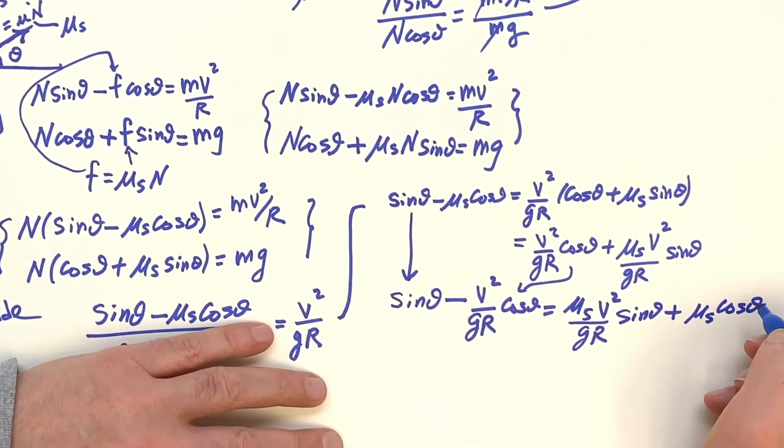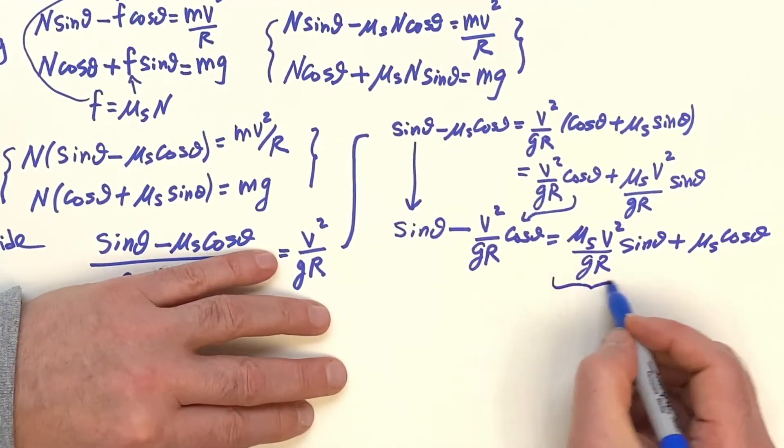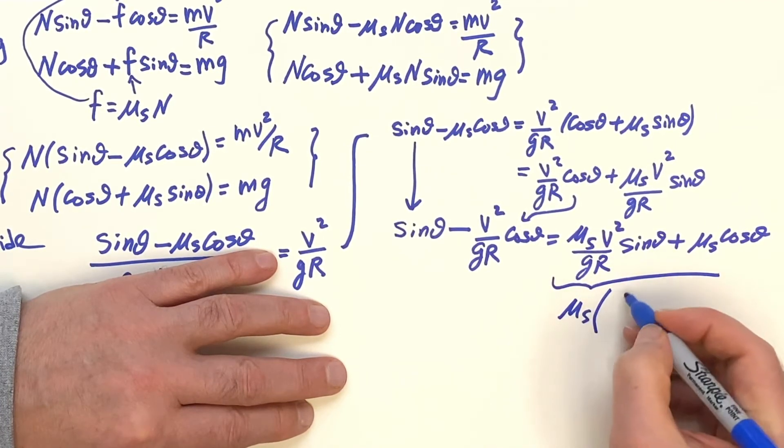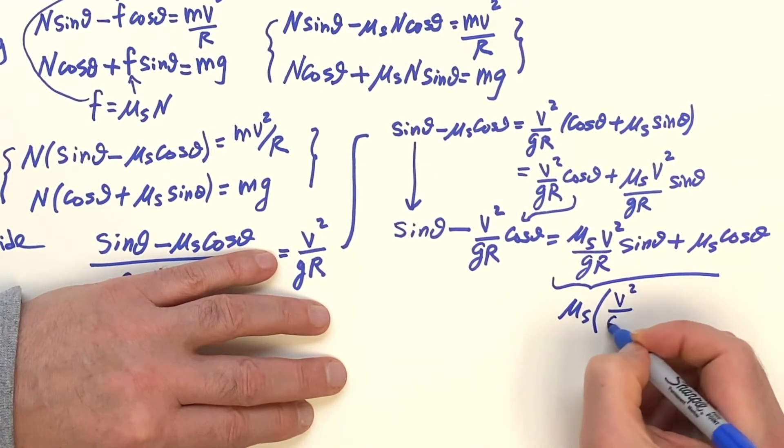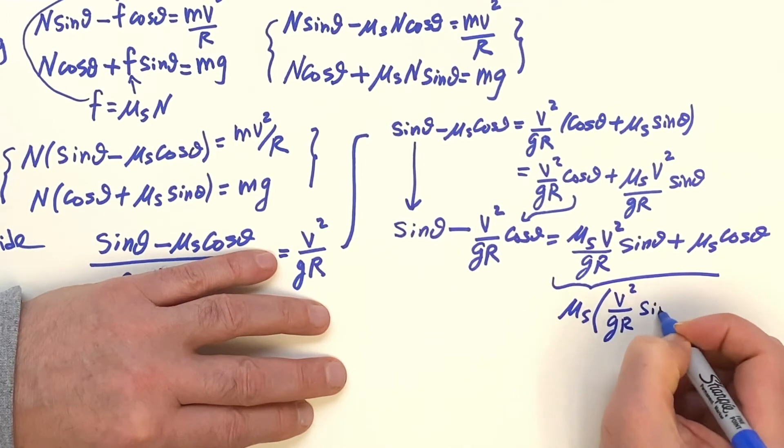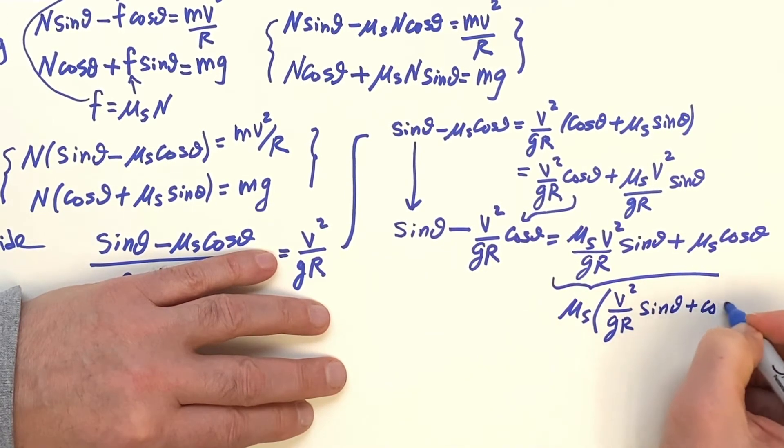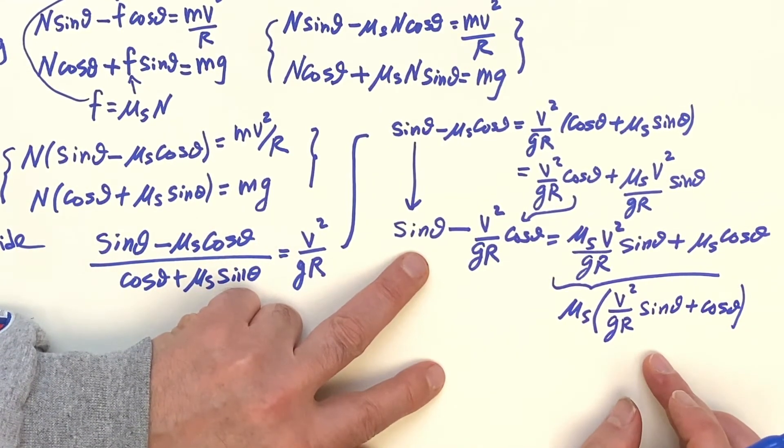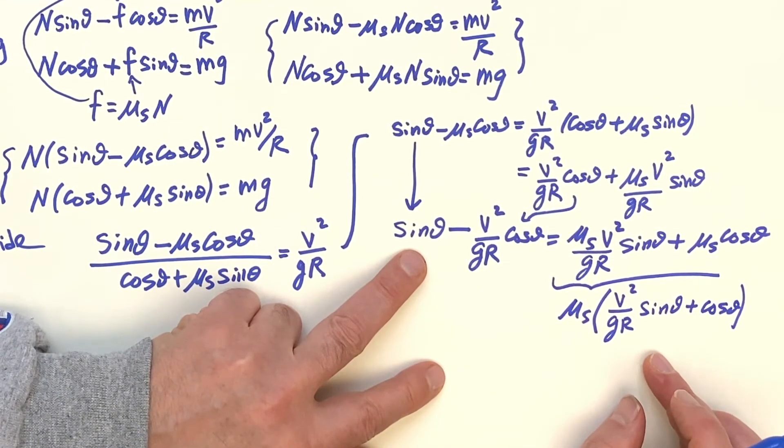Okay, now we're almost there. You see on this side, the Mu, S can come out. I have V squared over G, R, sine of theta plus cosine theta. So I'm getting close to being finished. But I would like to divide by the cosine here, so I can get the tangent.